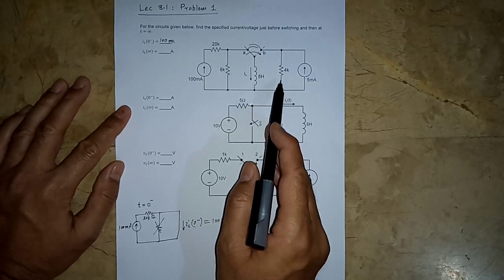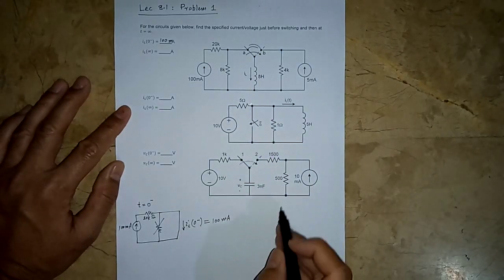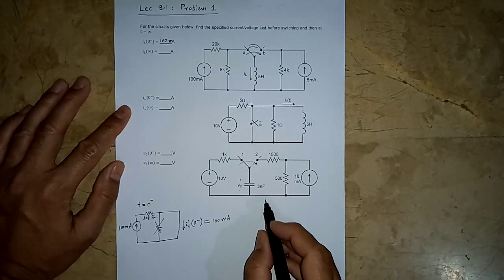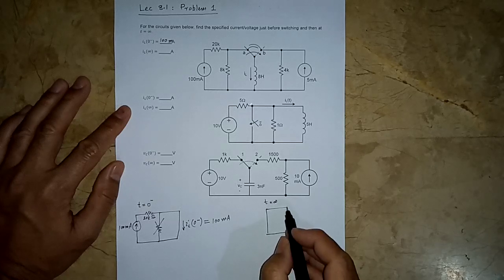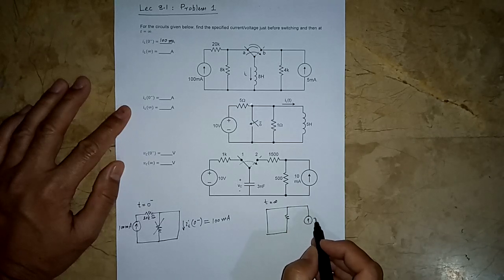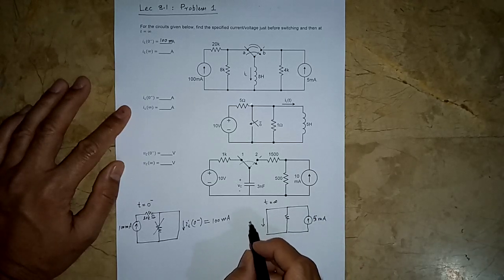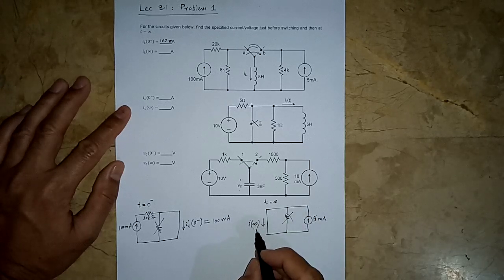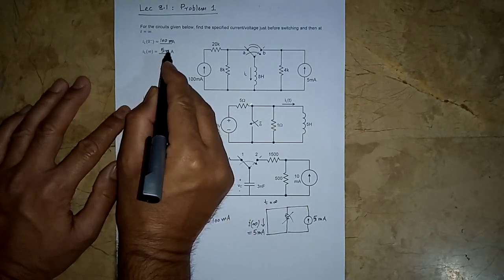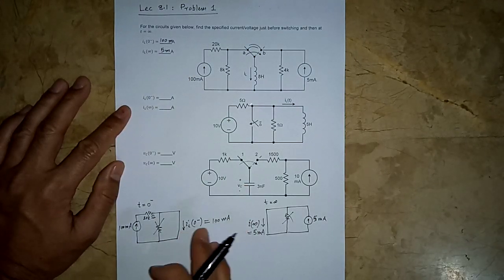Once switching has happened the new circuit comes into action. When a long time has passed — at t equals infinity — the inductor again behaves as a short circuit, shorting out its parallel resistor. All the current from the new current source passes through the inductor, so IL(∞) equals 5 milliamperes. In steady state, inductive and capacitive circuits reduce to simple DC circuits.